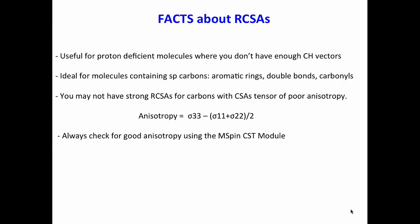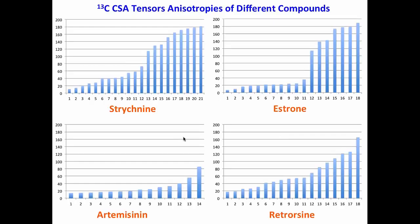So the summary here is that we were able to show that using compression or stretching, we were able to show that we could determine strychnine, estrone, mefloquine, and menthol. So let me tell you some facts. I would like to show you some examples. I don't have much time, but RCSAs are useful for proton-deficient molecules where you don't have enough CH vector. It's ideal for molecules containing SP2 carbons, aromatic rings, double bonds, carbonyls. But you may not have strong RCSAs for carbons with CSA tensors of poor anisotropy.